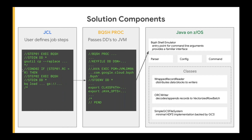This also lets us use a normal command line parsing library, so once it gets past the shell emulator class, it looks like a normal Java application to the people working on the code. Underneath that, here are the abbreviated contents of the proc: we have a key file where somebody has uploaded a JSON key file for a service account. This can also be provided through an environment variable. The key file might be on the Unix file system, but it also works if it's an MVS dataset.